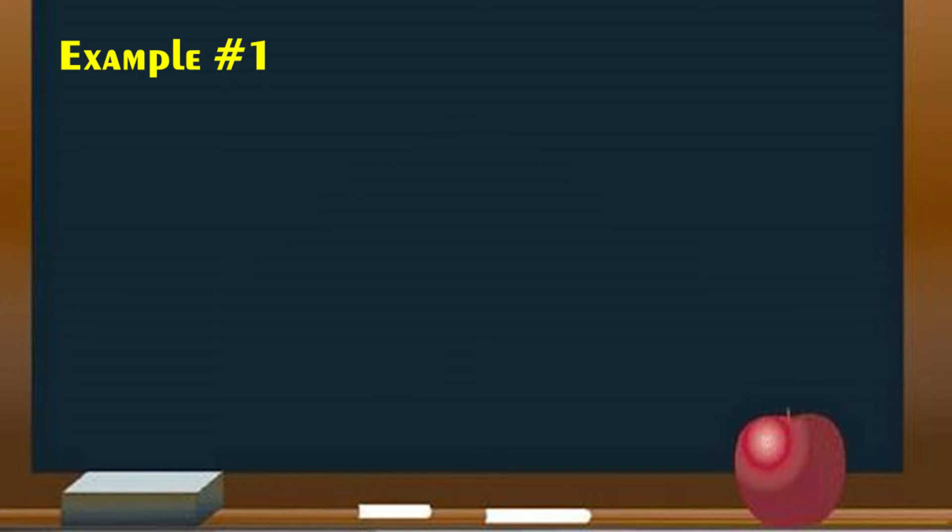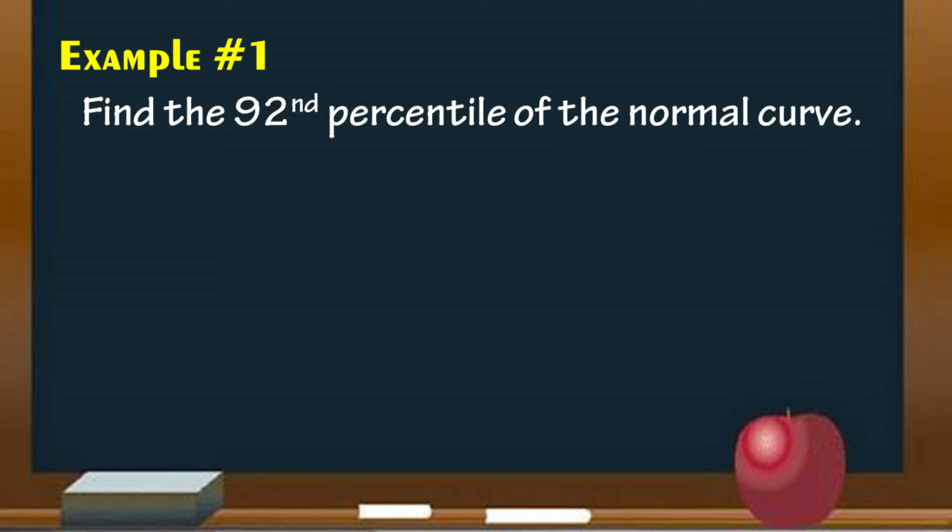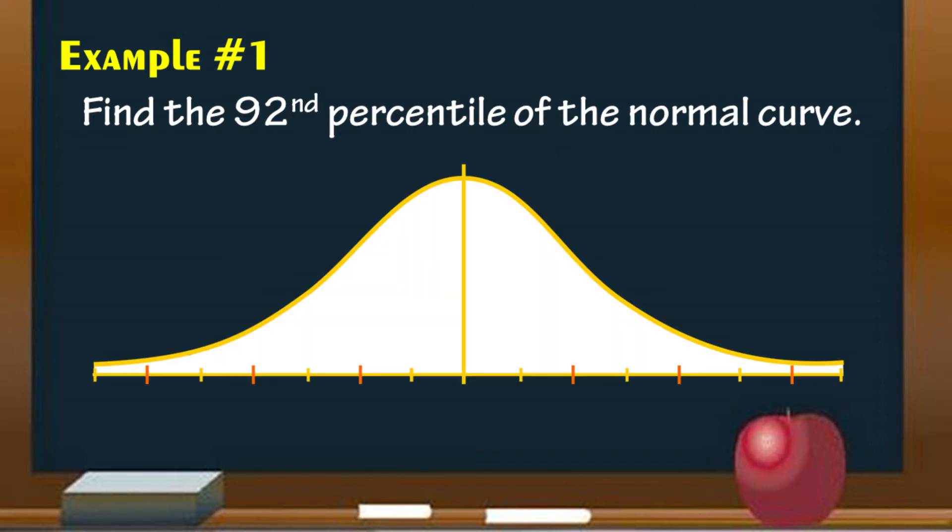Now let's take example number 1. Find the 92nd percentile of the normal curve. To do that, first, draw a normal curve. Second, express the given percentage as a probability. We have 92% or 0.92.